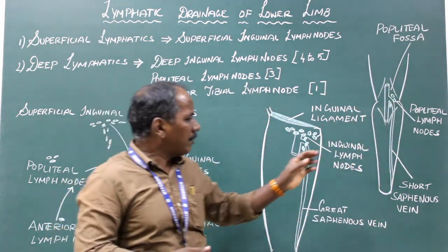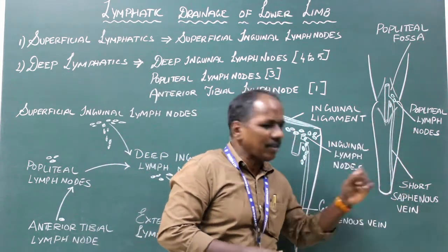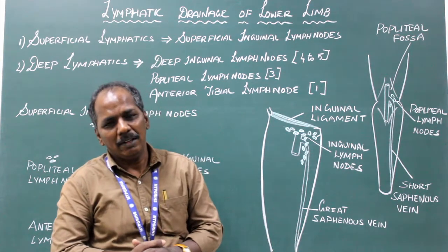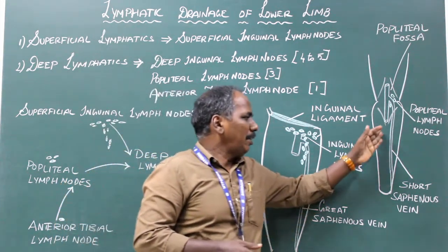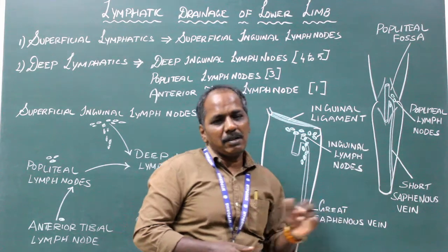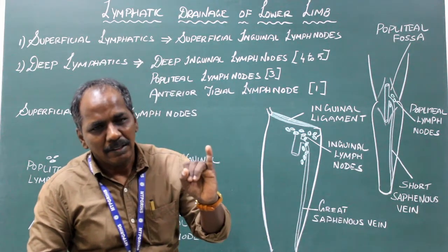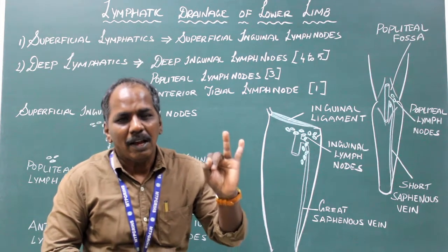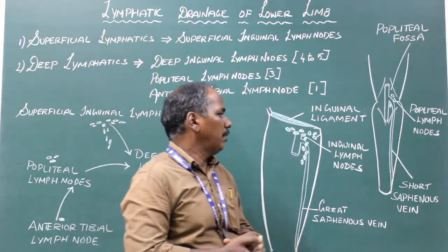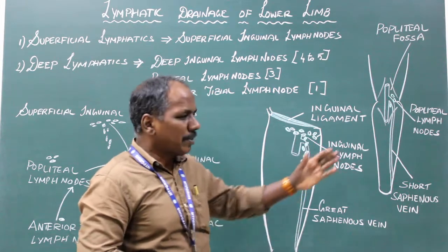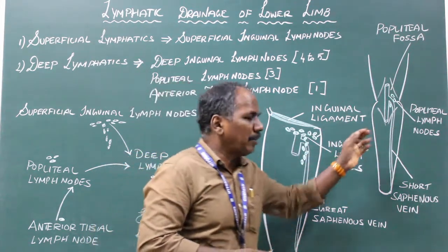The popliteal lymph nodes are present near the terminal part of the short saphenous vein. They drain lymphatics from the territory of the short saphenous vein, which includes the back of the leg, the heel, and the lateral margin of the foot. They also drain lymphatics from the knee joint and the deep part of the leg.